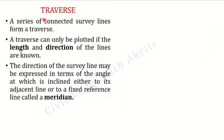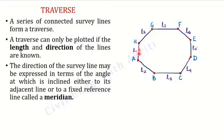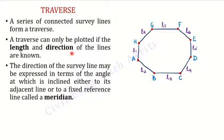What is a traverse? A series of connected survey lines forms a traverse. Here we can see a series of lines that are connected — that is what a traverse is. Many lines are connected and created — each line has some length and some direction. The lengths are L1, L2, L3, L4 and so on, and each line has a particular length.